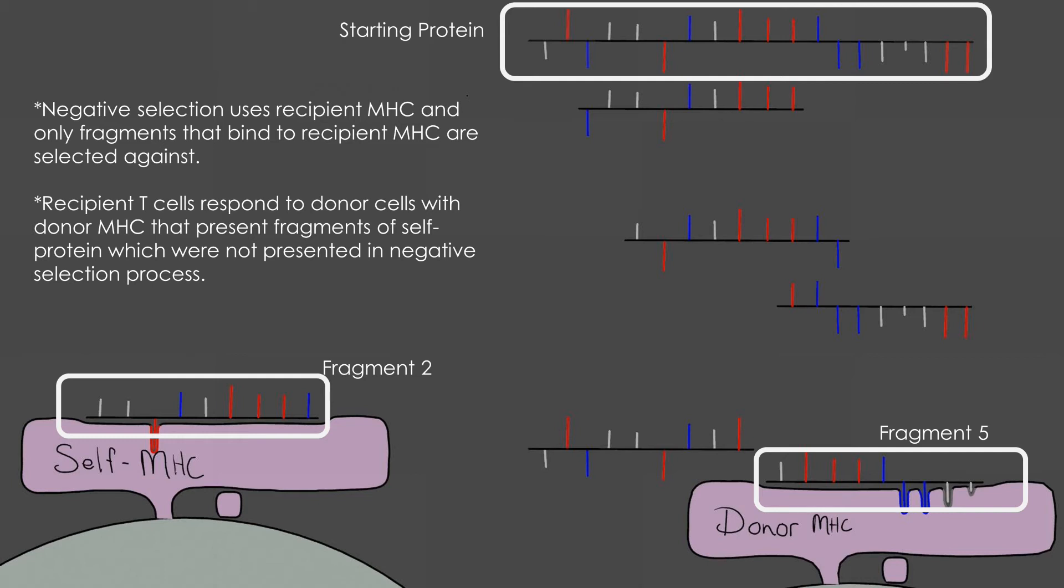From transplant to acute rejection is less than six months because there are so many T cells reacting to so many peptide fragments. Also, remember this was a simplified model looking only at the charge of the peptide fragments. In reality, MHC is selective for specific amino acids and shapes and not only the positive and negative charges.